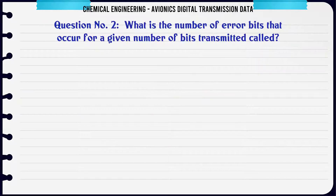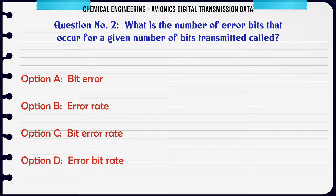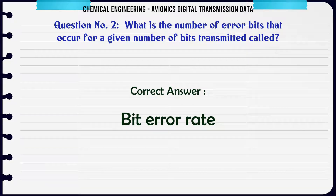What is the number of error bits that occur for a given number of bits transmitted called? A: Bit error. B: Error rate. C: Bit error rate. D: Error bit rate. The correct answer is Bit error rate.